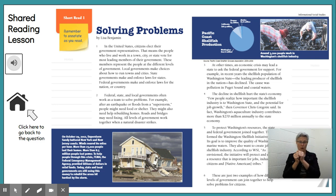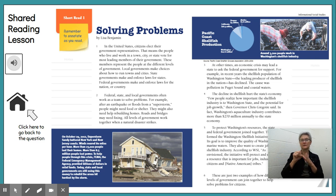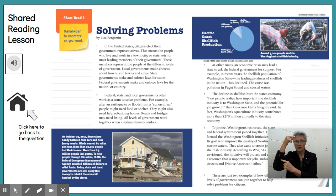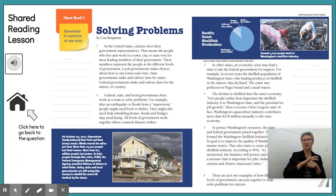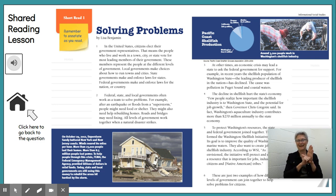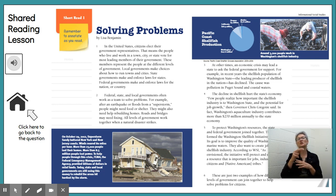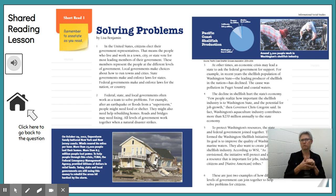At other times, an economic crisis may lead a state to ask the federal government for support. For example, in recent years the shellfish population of Washington State — the leading producer of shellfish in the nation — has declined. The cause was pollution in the Puget Sound and coastal waters. The decline in shellfish hurt the state's economy. Few people realize how important the shellfish industry is to Washington State and the potential for job growth.